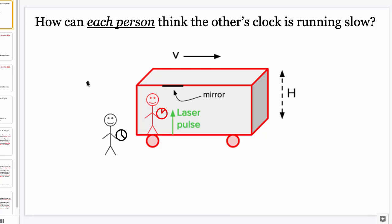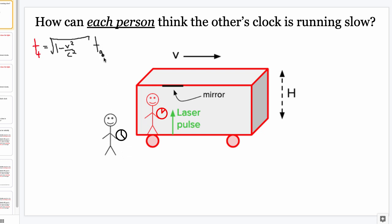In the last video, we derived the time dilation formula. It looks something like this: the time measured by the moving observer — the person on the train — is equal to the square root of one minus v squared over c squared, where v is the speed of that moving observer as measured by someone who thinks they're not moving, multiplied by the time measured by the person at rest on the ground. This is the time dilation formula.